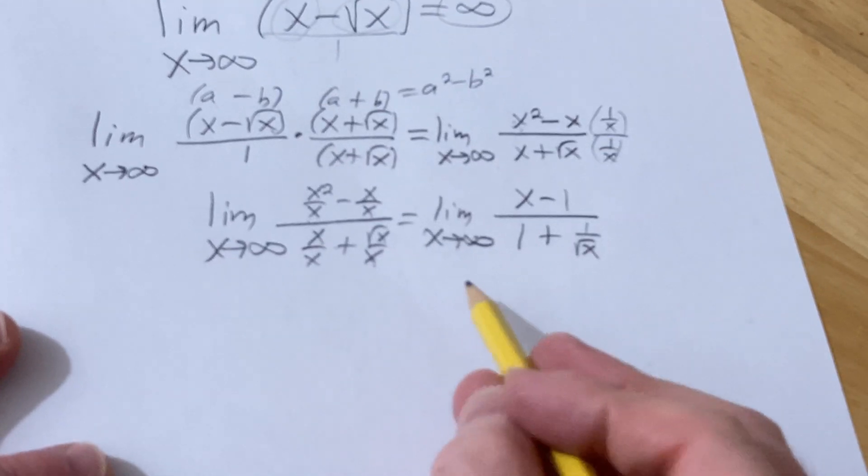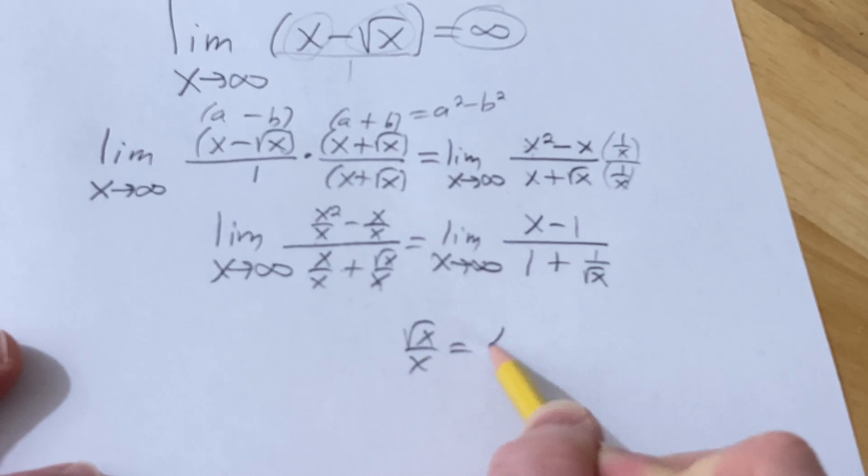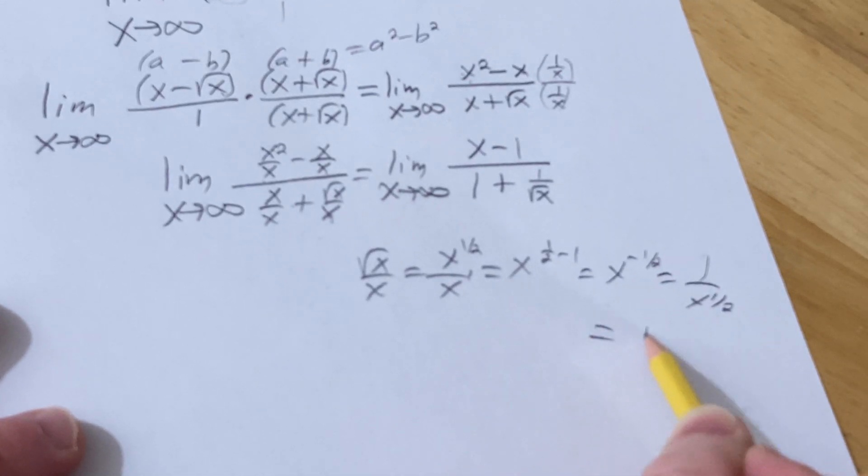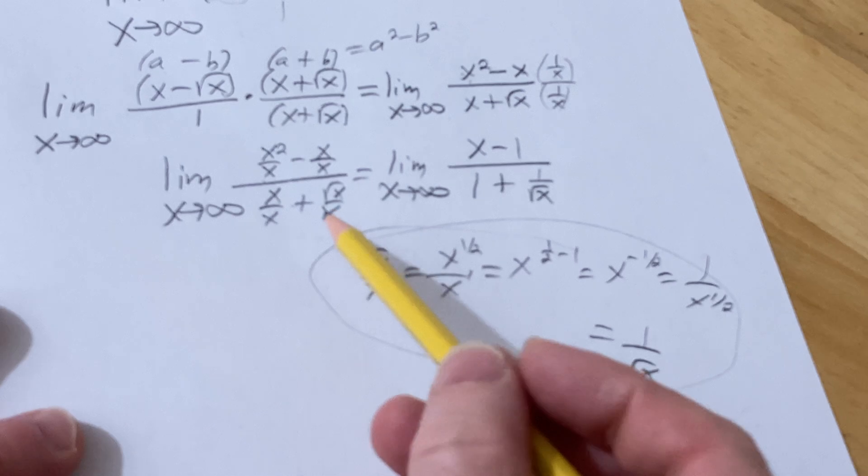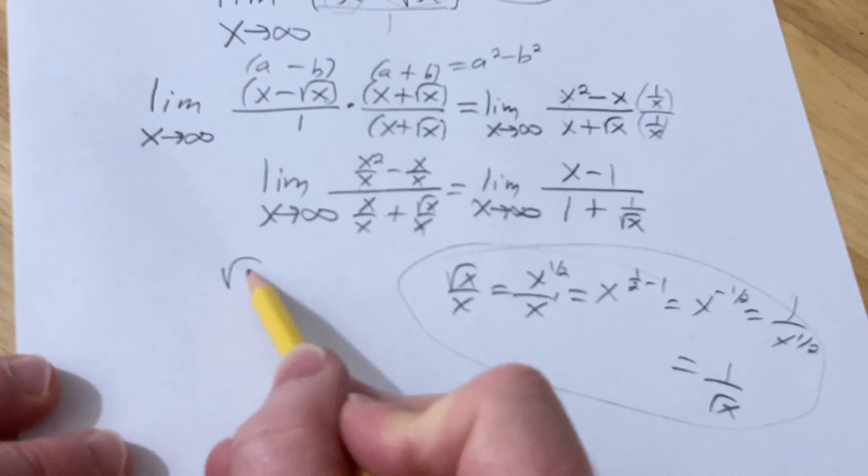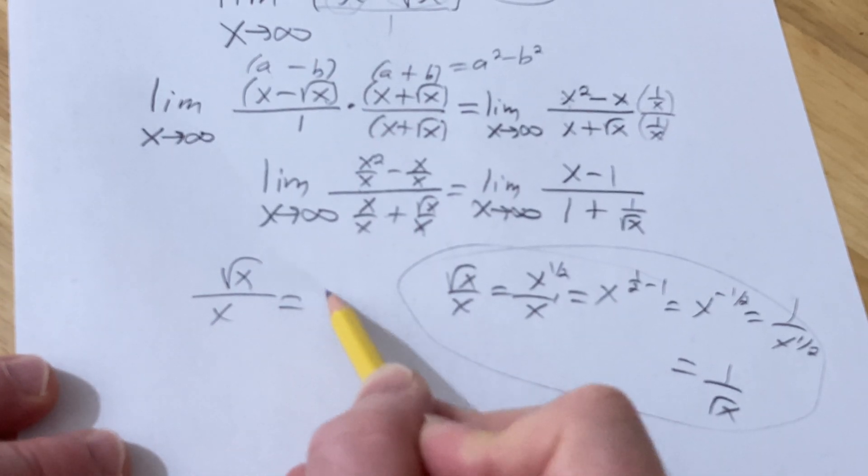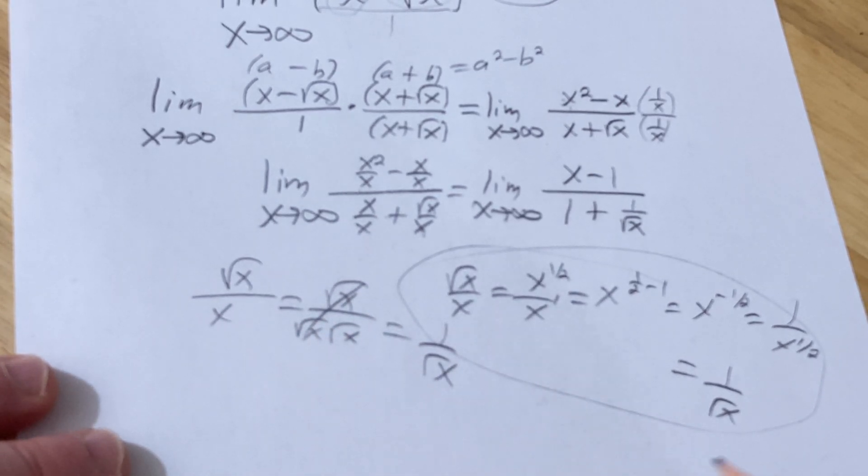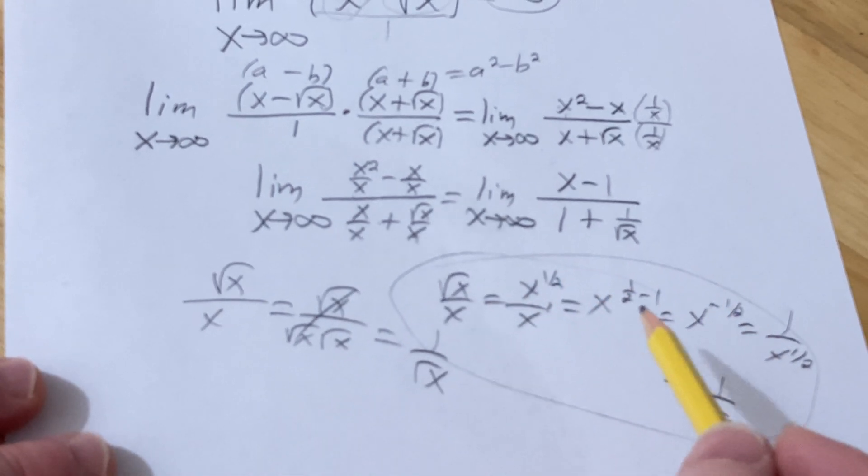How do I do that? Like this, square root of x over x is x to the 1 half over x, and you subtract. Boom. That's a way to justify it. Or you can just think of it as square root of x over x is the square root of x and then square root of x, 1 over square root of x. That works as well. Multiple ways to reason it in your mind.